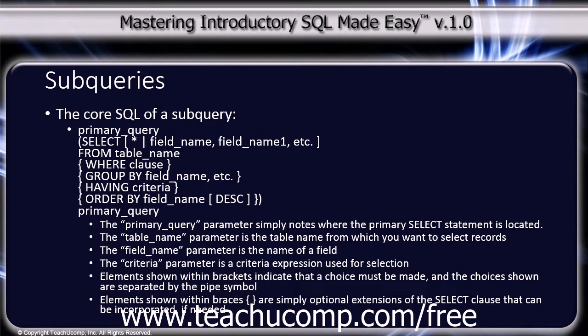Elements shown within braces are simply optional extensions of the SELECT clause that can be incorporated if needed. Note that a subquery does allow for most clauses that can be incorporated within a primary SELECT statement. So the core SQL of a subquery is your primary query, then within parentheses: SELECT either all or a listing of field names from a table name, possibly using the WHERE clause, possibly using the GROUP BY clause, possibly using the HAVING clause, possibly using the ORDER clause, and then the closing parenthesis, followed by the remainder of the primary query.